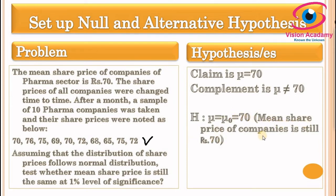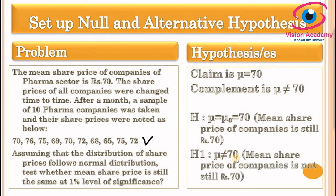The alternative hypothesis is H₁: mu ≠ 70 rupees, meaning the mean share price of pharma companies is not still at 70 rupees. Since the alternative hypothesis uses 'not equal to,' this is a two-tailed test. We have a 1% level of significance. So we have set up the null and alternative hypothesis and identified the significance level.